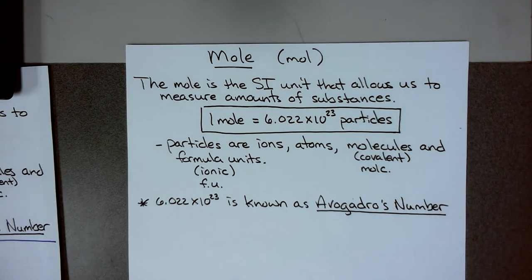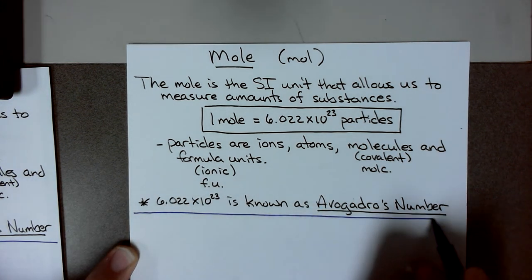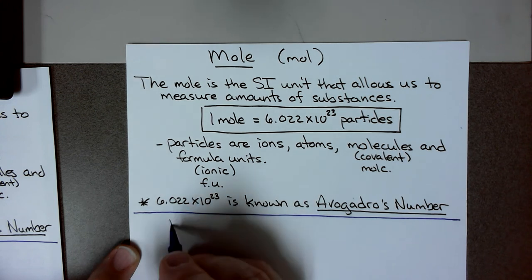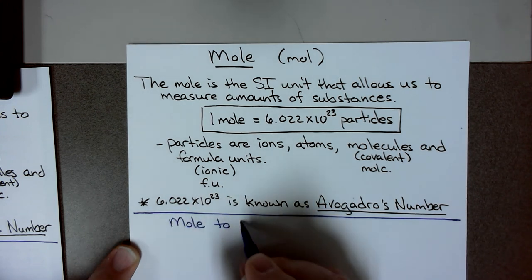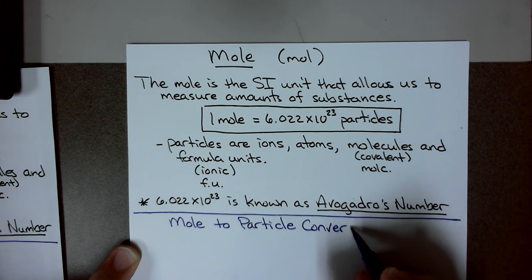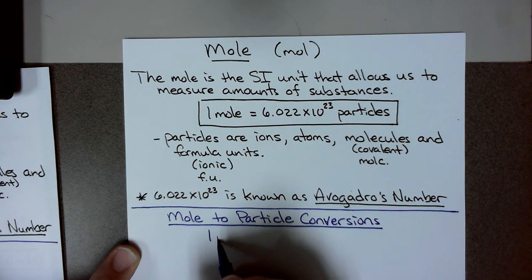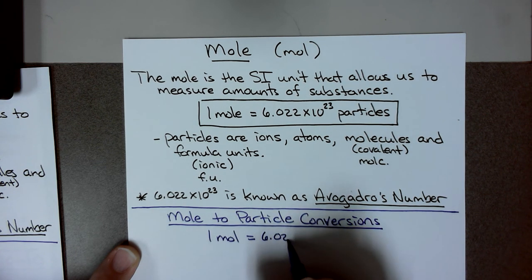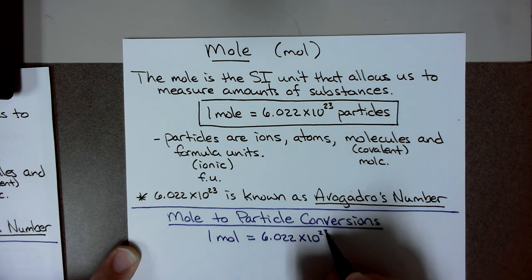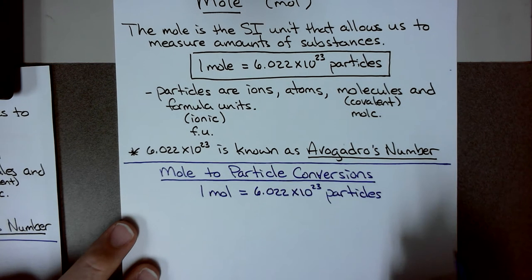Now that you have an idea of what a mole is, let's do some conversions. We're going to do mole to particle conversions. The conversion factor or equality statement for this mole to particle conversion is: 1 mole is equal to 6.022 times 10 to the 23rd particles. That's the equality statement I use to set up conversion factors.